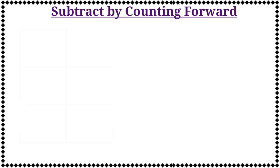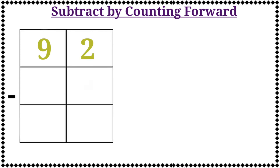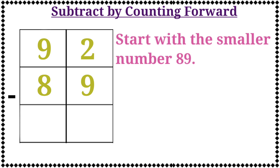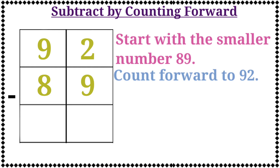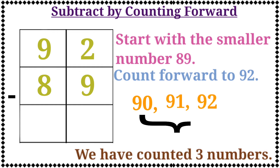The next example is 92 minus 89. Start with the smaller number 89, then count forward to 92. Let's count: 90, 91, 92. Now we have counted 3 numbers. Therefore, the answer is 92 minus 89 is equal to 3. Let's write the number 3 in the box.